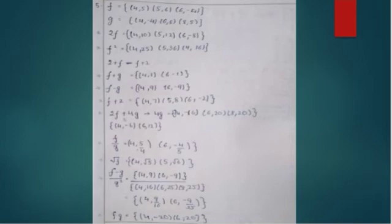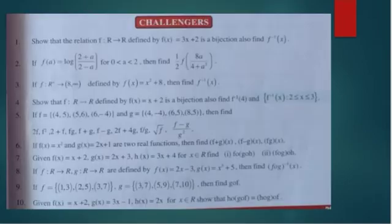Similarly, f² and other combinations can be found the same way. Note that 2·(2+f) - f + 2 simplifies to f + 2 only. Now let's go to the eighth question.